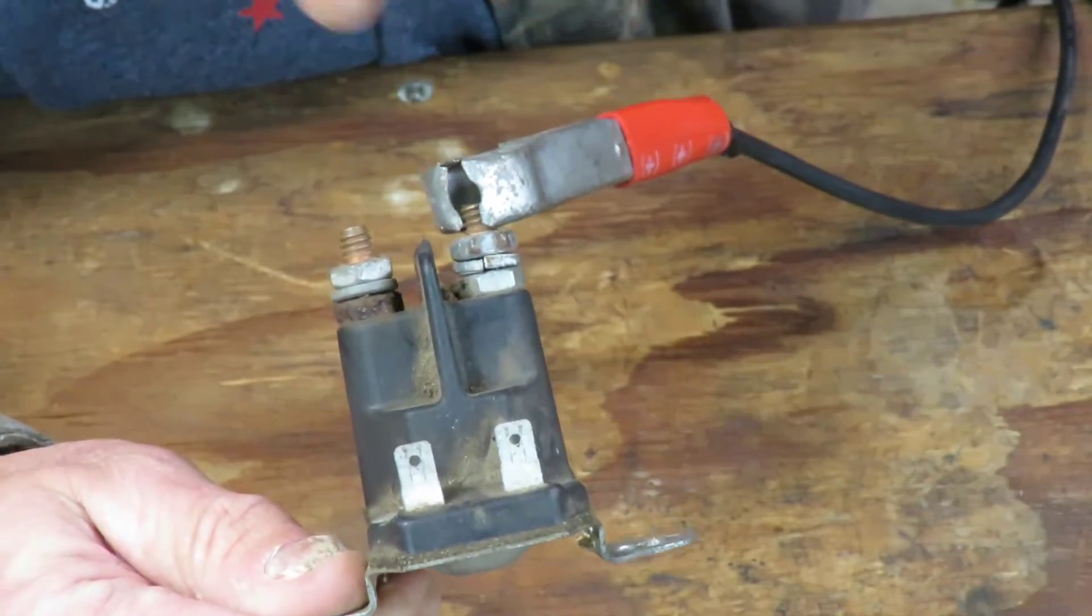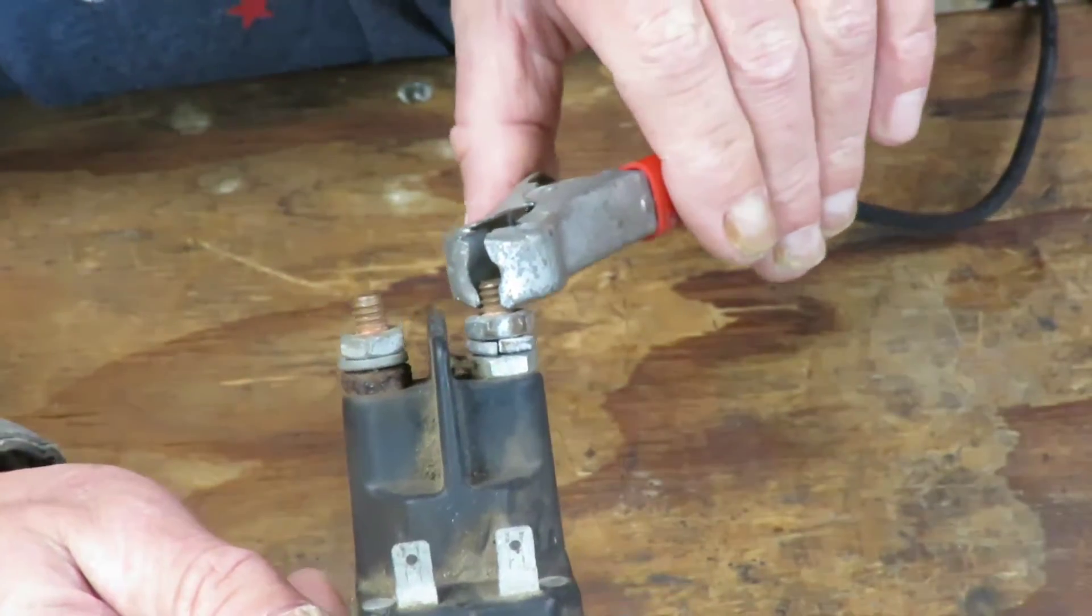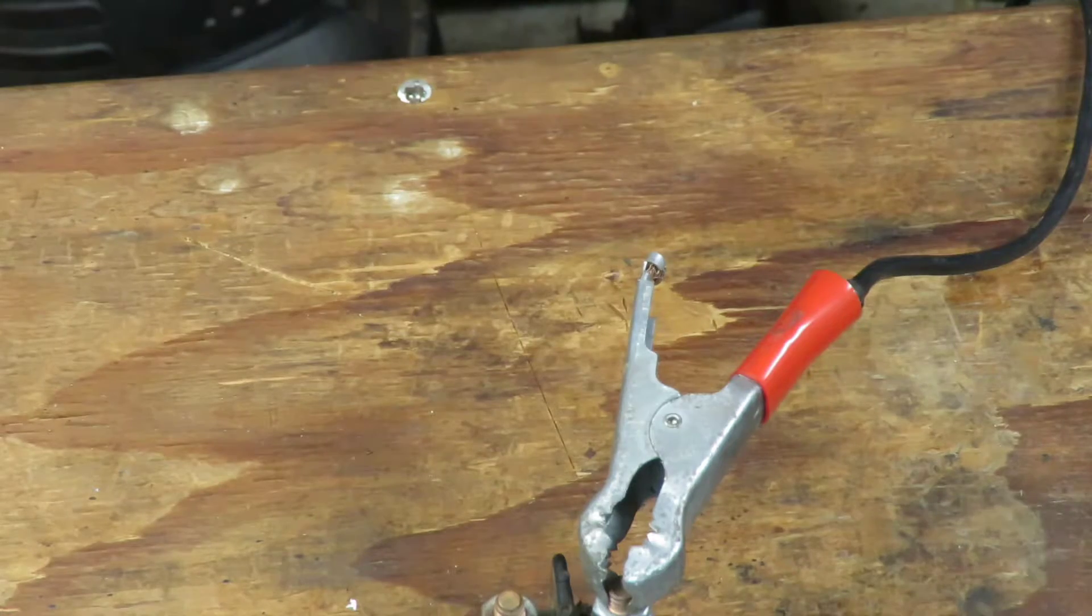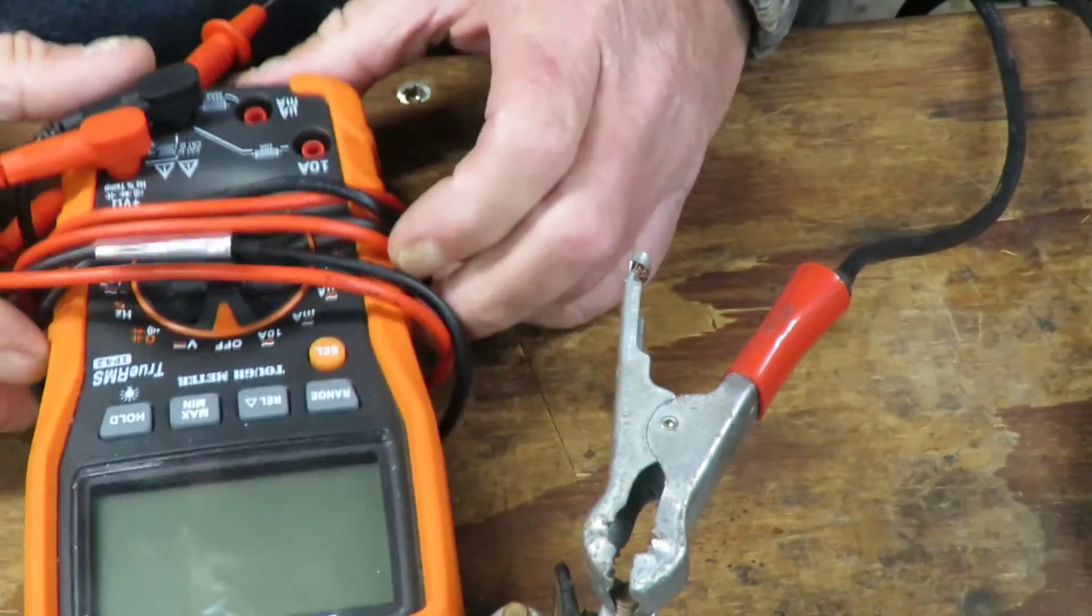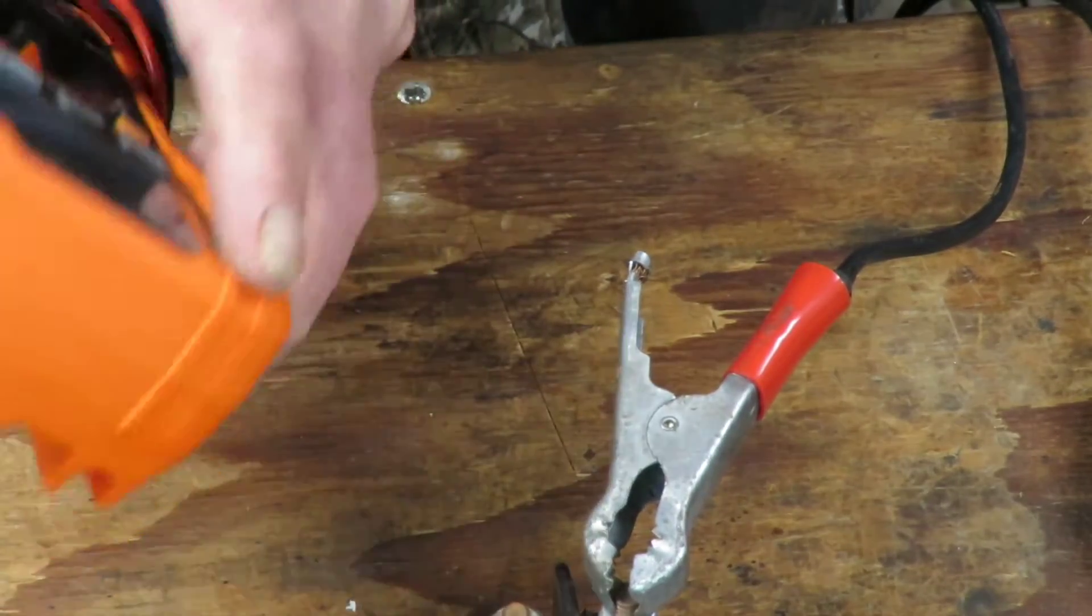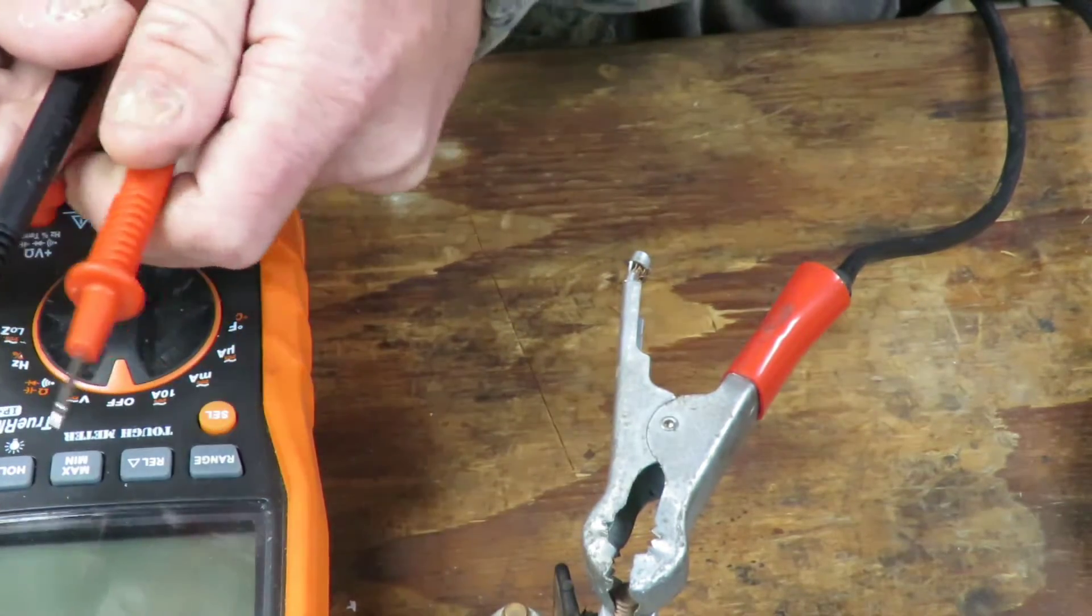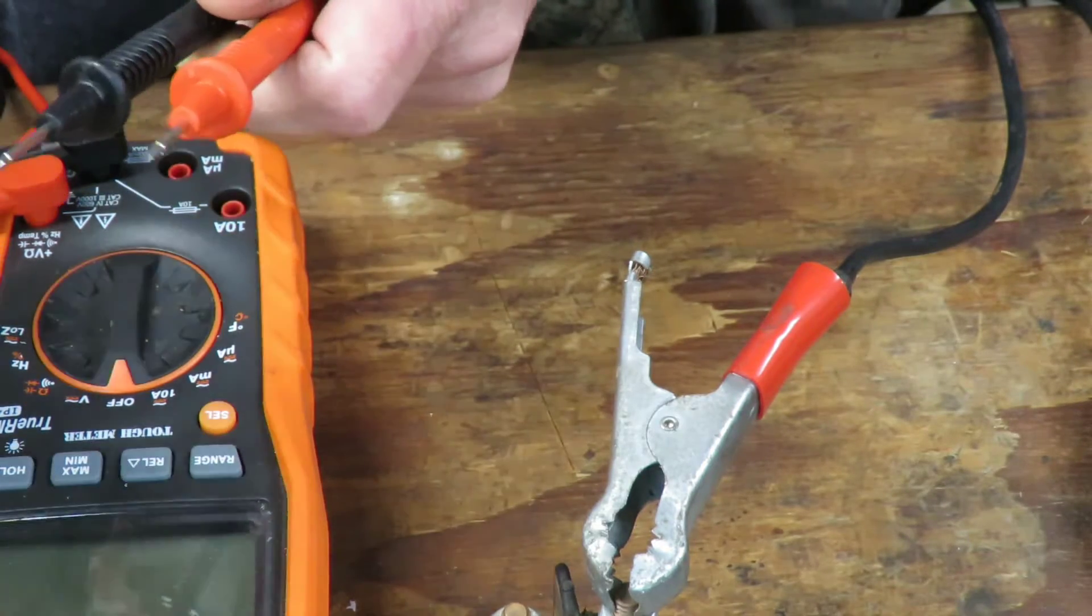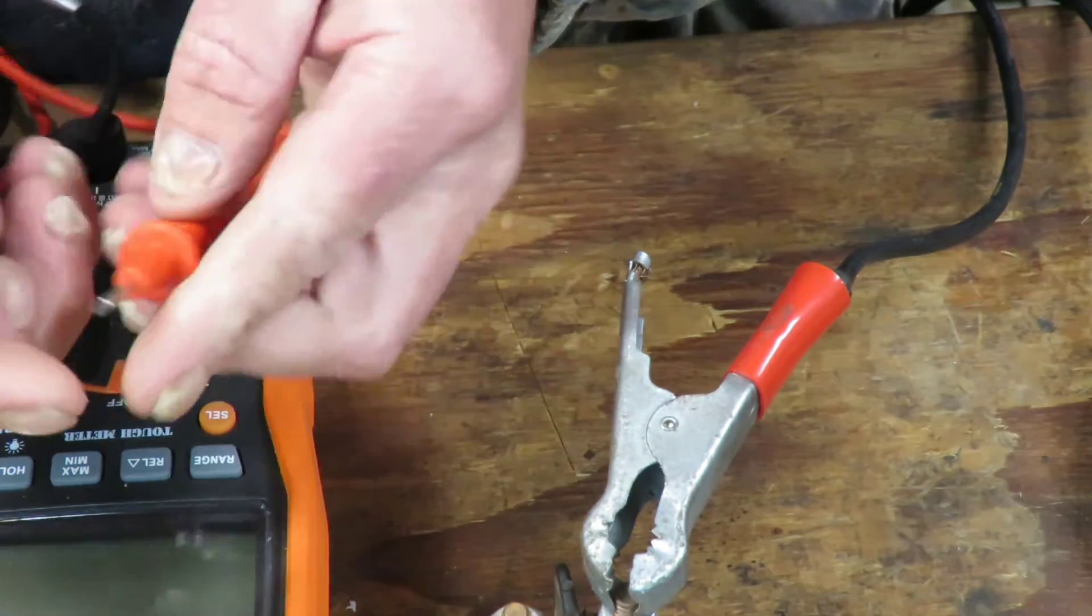So your second test you will need a multimeter. These are a little hard to use to do it. This meter comes with little adapters you can slide on there and it gives you little alligator clips which is real helpful.